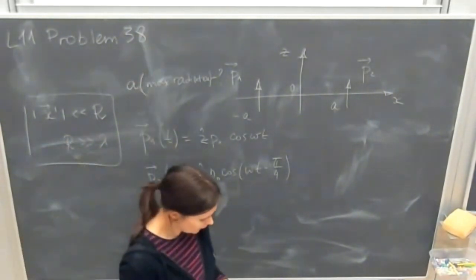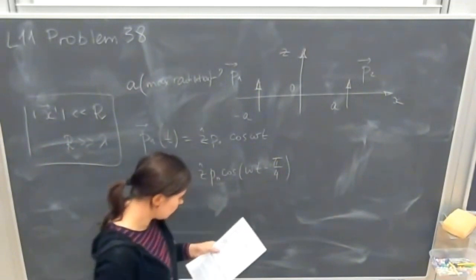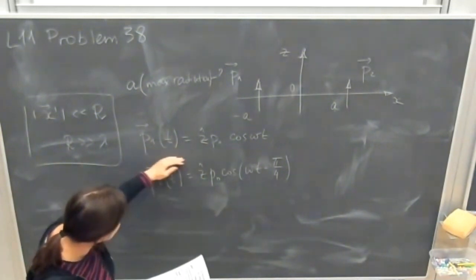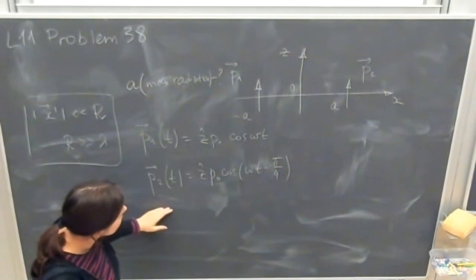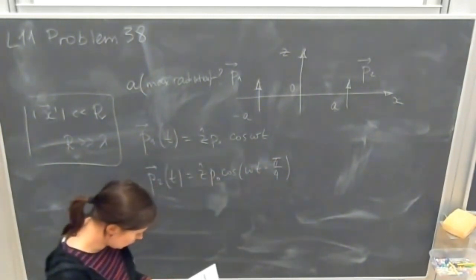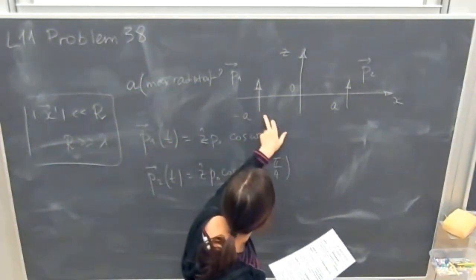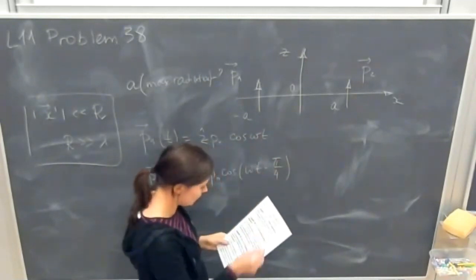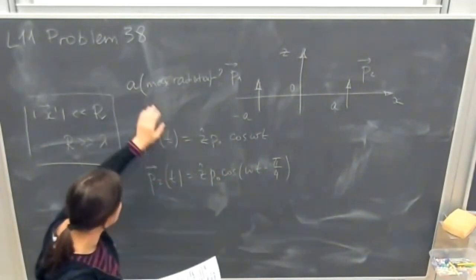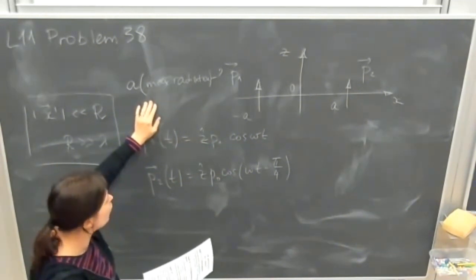Problem 38: There are two dipoles. One has the following dipole moment, another one has a little bit difference in the phase. They are placed at the points minus a and a on the x-axis, and it needs to find the parameter a that the radiation is maximal along x.